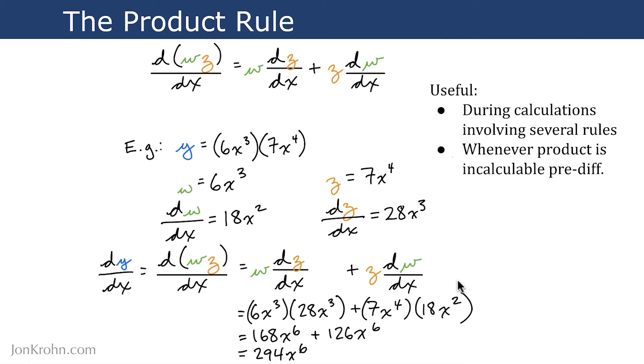You can then multiply these out. So 6x cubed times 28x cubed. x cubed plus x cubed is x to the power of 6, because we add exponents when we multiply them by each other. And so that becomes x to the power of 6. And then 6 times 28 is 168.